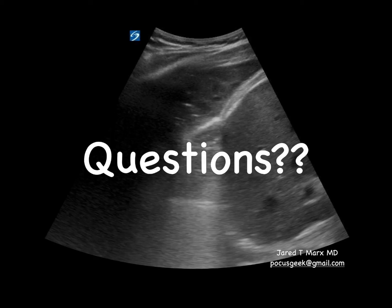Hopefully that helps clarify why we see the different things we do. To reiterate: think of B-lines as infiltrate — they can represent cephalization like we see in pulmonary edema — and think of hepatization as consolidation. I see a lot of novice users get confused about what those things mean. If you have any questions or comments, feel free to email me at pokusgeek@gmail.com or comment below. Thanks for watching.